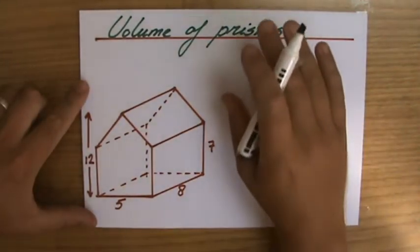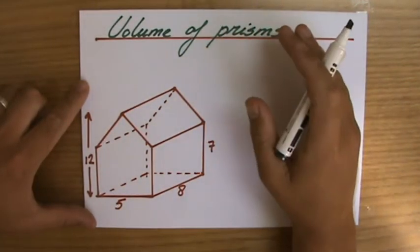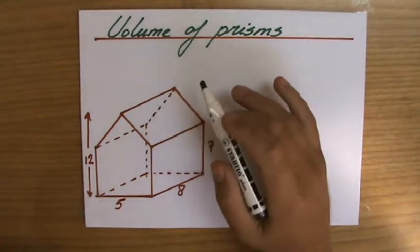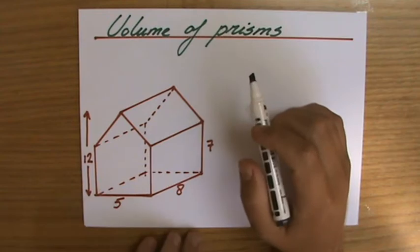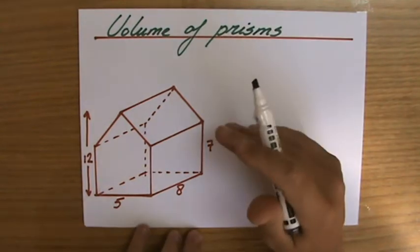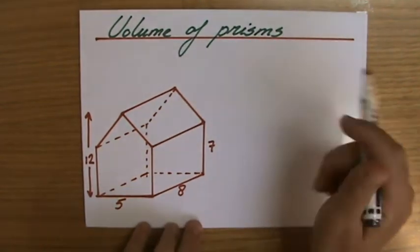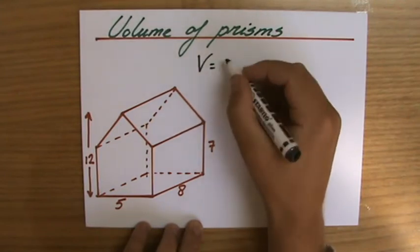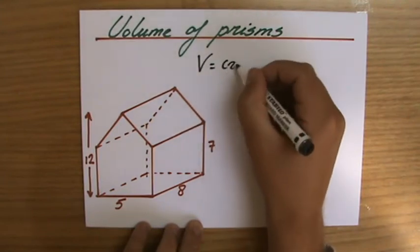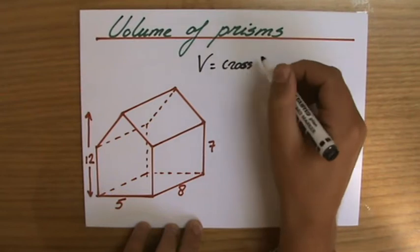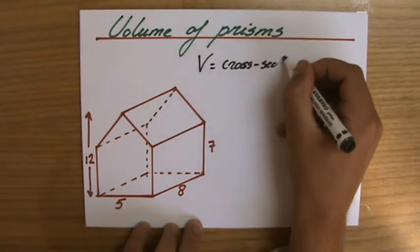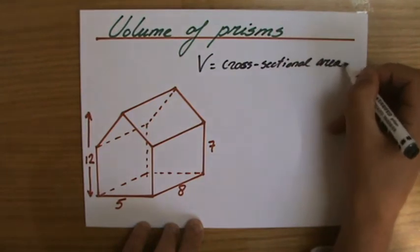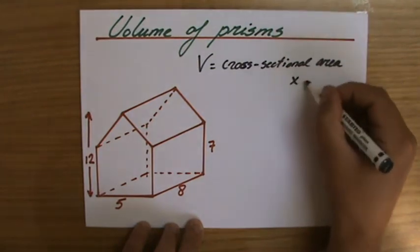So we're going to find out if we truly understand how to calculate the volume of prisms. We found out that in order to find the volume, we have to find the area of the cross section and multiply that by the length. The volume is the cross sectional area times the length.